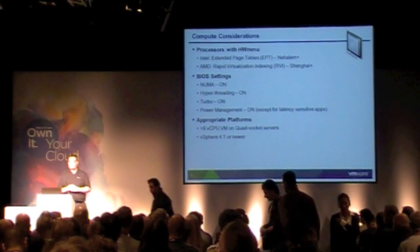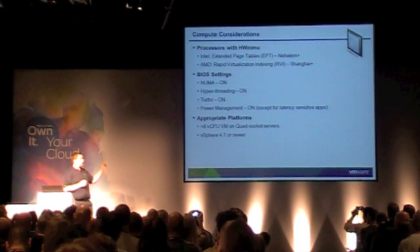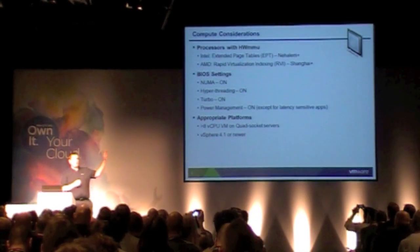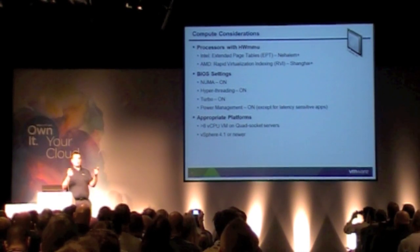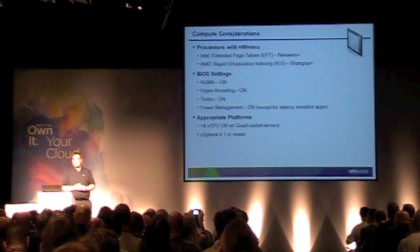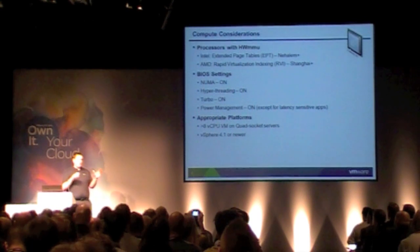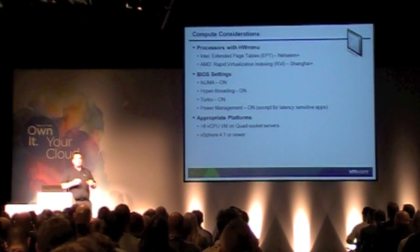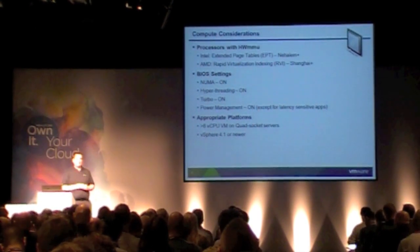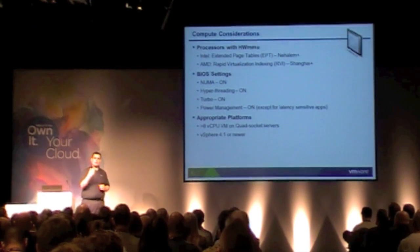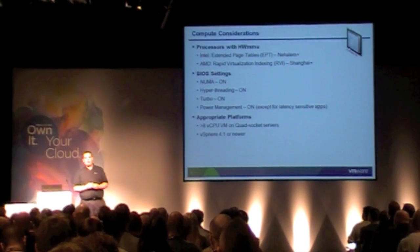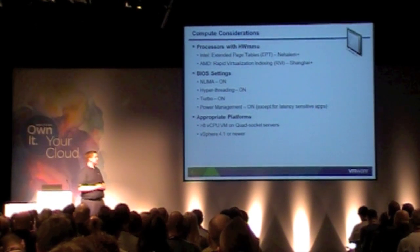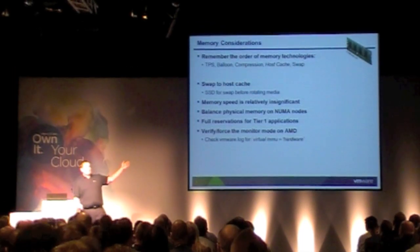Mark's rough rule of thumb: anything greater than an eight-way VM, I like to see those land on quad-socket platforms. As core counts change the rules will give and take, but the idea is that if you build a big VM it's probably using a lot of power, so make sure it's on a powerful platform.